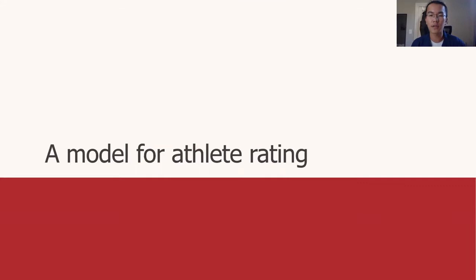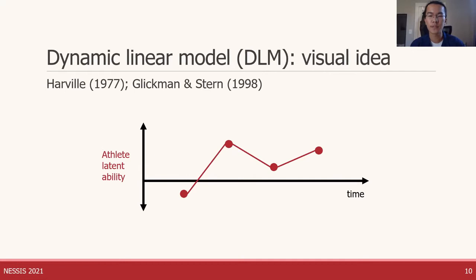The goal of this project is to carefully use score information to infer latent athlete abilities in multi-competitor games. Hopefully, using scores instead of ranks can improve model performance beyond what we can get from the Glickman-Hennessy model. Now we'll talk about the model we developed — our model is a dynamic linear model, or DLM for short. DLMs have been used to rate athletes for a while, and I've put some foundational references for DLMs in sports, specifically American football, on this slide.